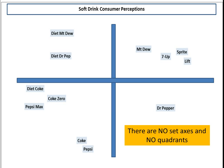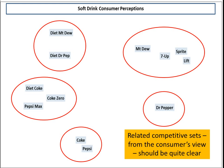What you should note is that an overall similarity map does not have the standard two axes that we normally find in introductory perceptual maps — so there's no axis, no measurements running up and down, and no quadrants. So let's go back to our map: how do we use it?